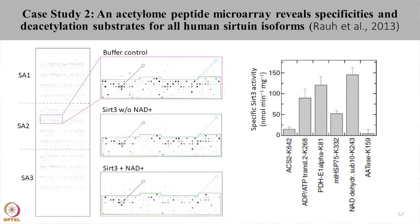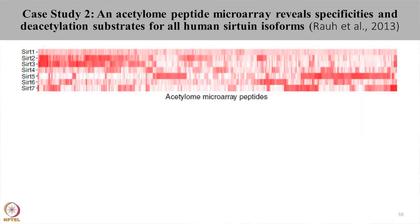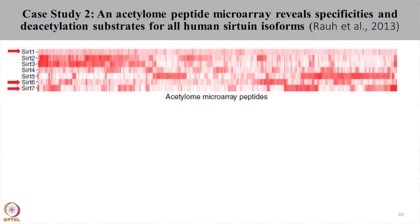A graph represents the specific deacetylation activity of sirtuin 3 across different peptides. The last protein, AATASK, was used as a negative control and showed no change in acetylation pattern. A heat map shows the deacetylation activity of all 7 sirtuin isoforms across 6800 peptides. Sirtuin 1, 6, and 7 localize to the nucleus. Looking at their target peptides, there is a specific preference pattern for sirtuins 6, 7, and 1. Sirtuin 6 and sirtuin 7 show specific deacetylation patterns with distinct targets, whereas sirtuin 1 shows nominal activity across a wide range of nuclear substrates.